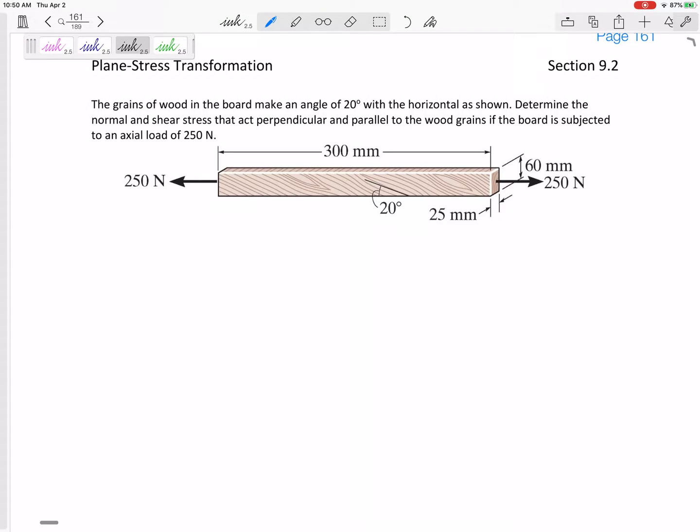Alright, so let's look at this problem. It's a lot different than the last one, but it's really the same. The grains of wood in the board make an angle of 20 degrees with the horizontal as shown.